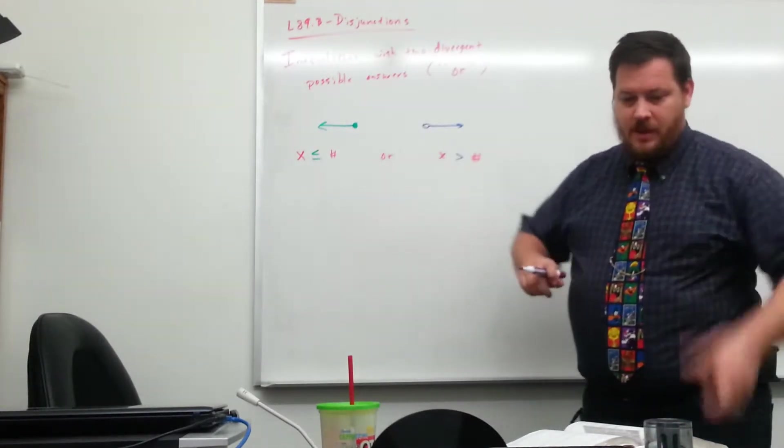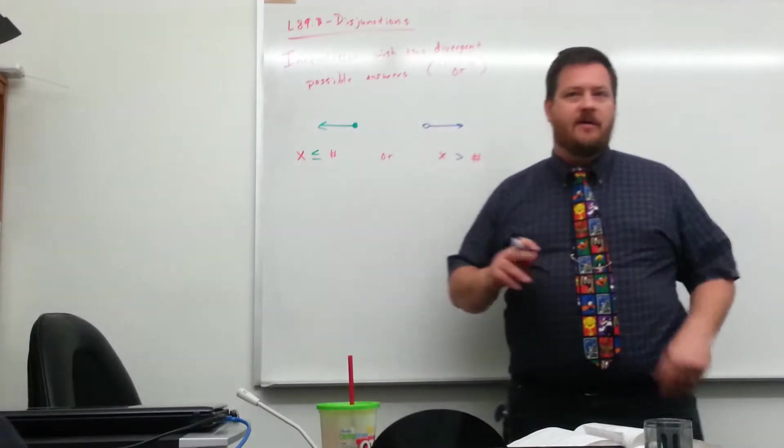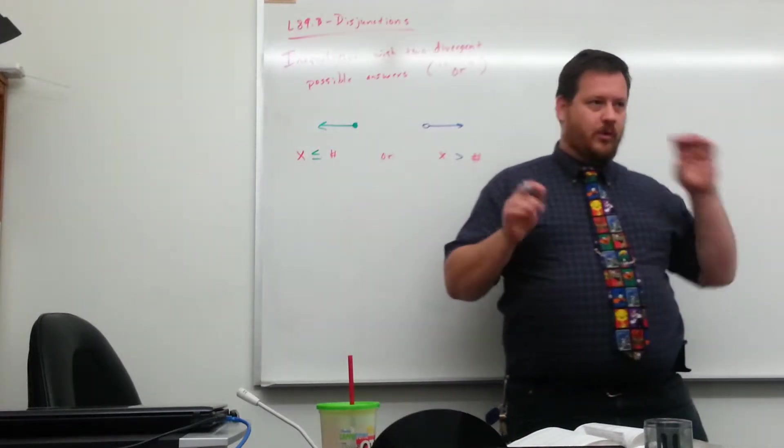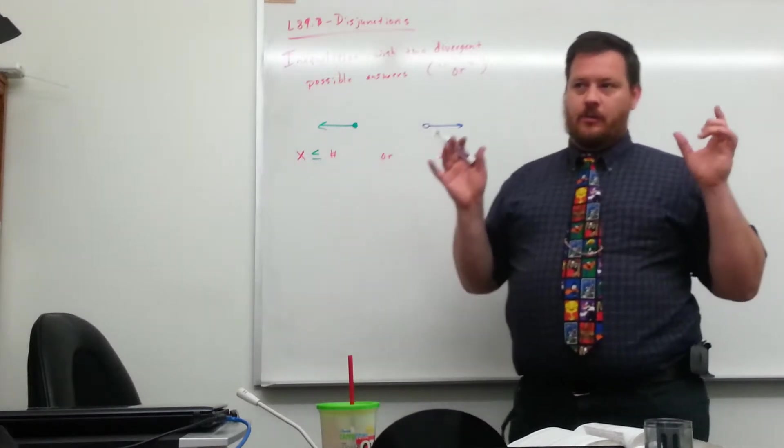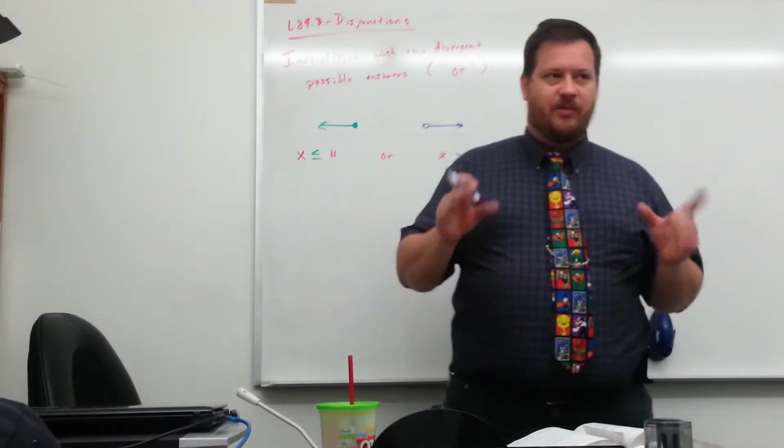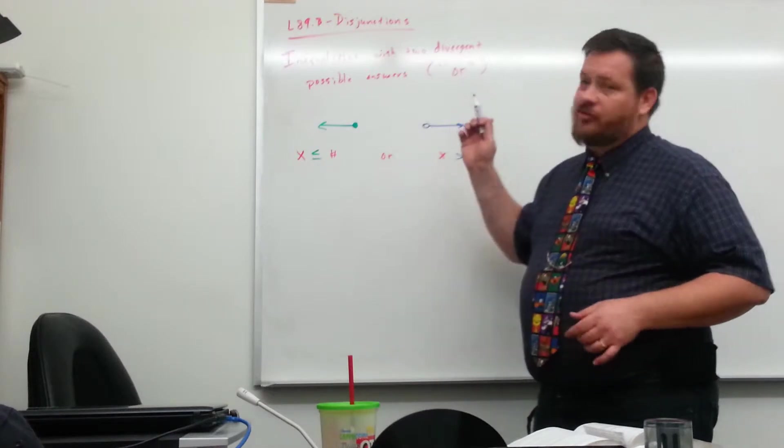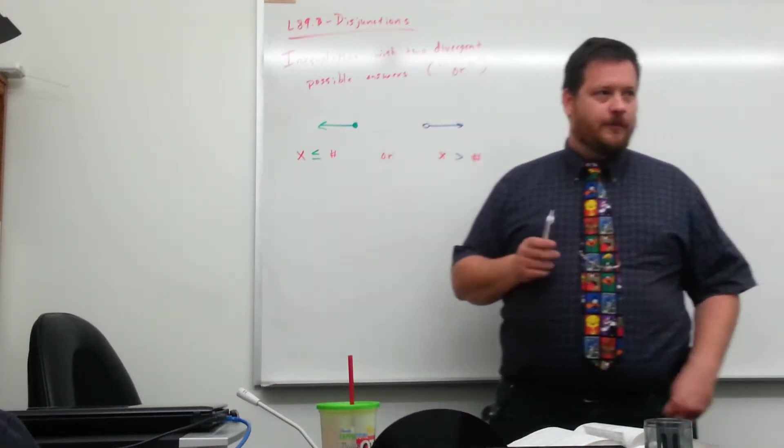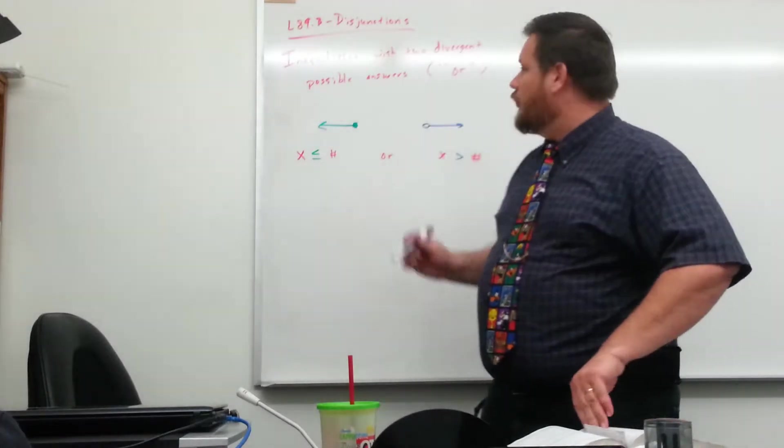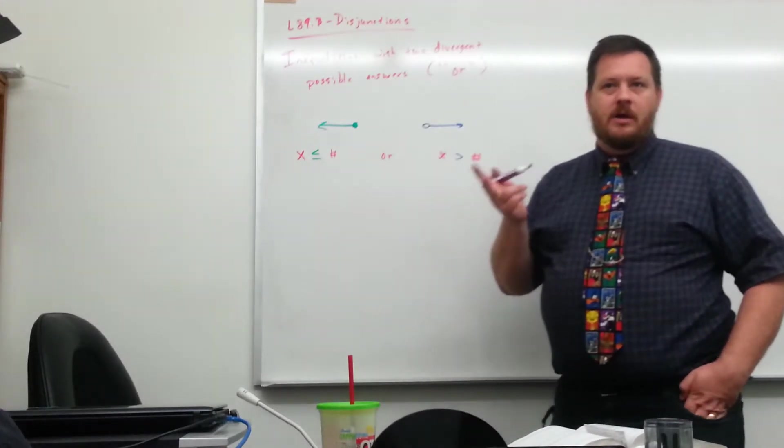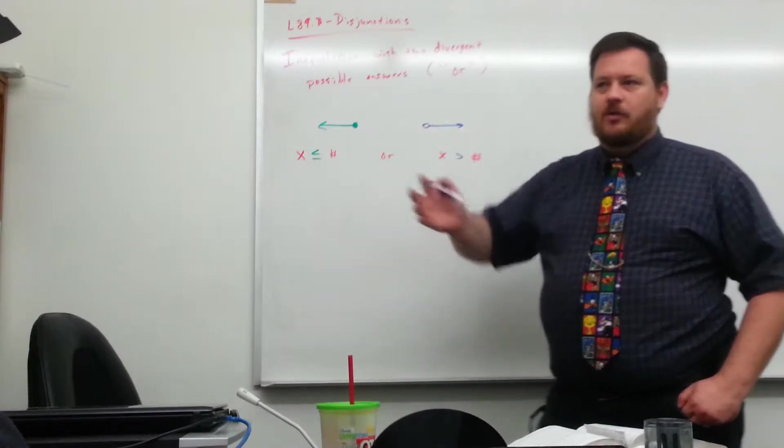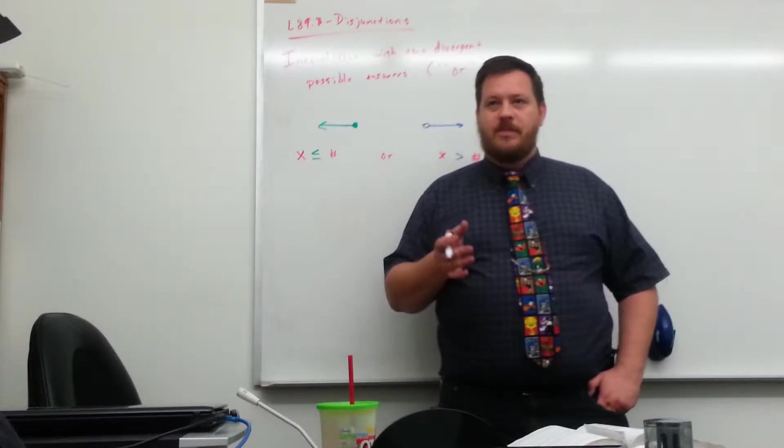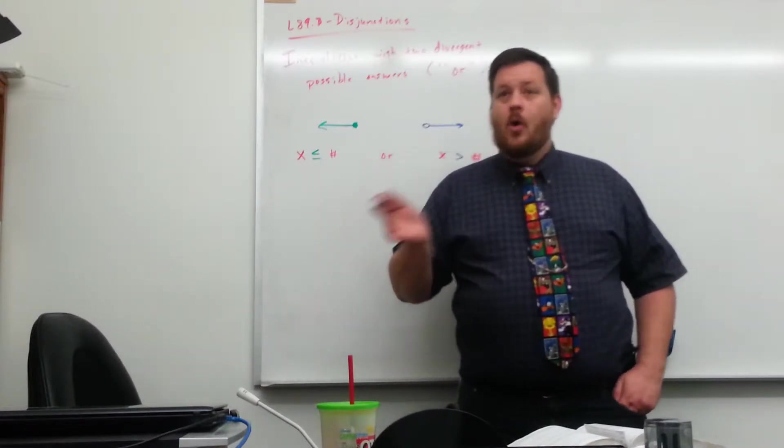So it can end up being disjunctions. Conjunction is when you have an inequality statement and another inequality statement, and whatever your graph looks like has to meet both of those criteria. Both of those things have to be true. With a disjunction, either of them can be true. So you're going to have two inequality statements, and you need to graph all the points or everywhere on the number line that meets either criteria, one or the other.